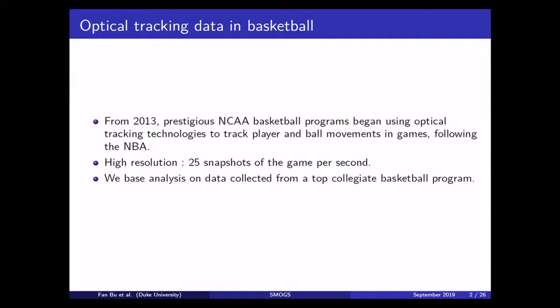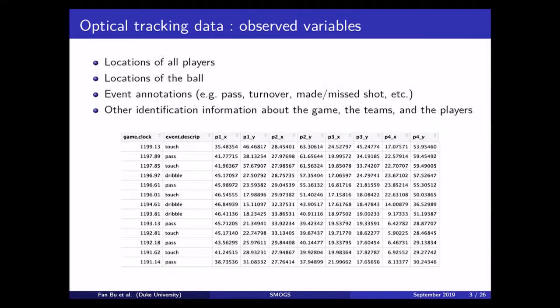So the data we have in this analysis are from one of those top college basketball programs. At each time point we have a lot of information in optical tracking data. We have the locations of all the players, we have the location of the ball, and we have some extra annotations of the events that are going on the court. And of course we have some general identification information of the game, the teams, and the players. So here is just a tiny little snippet of the data set we have on our hands.